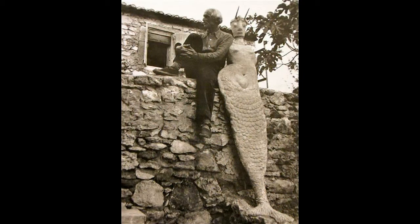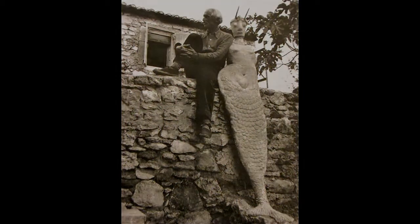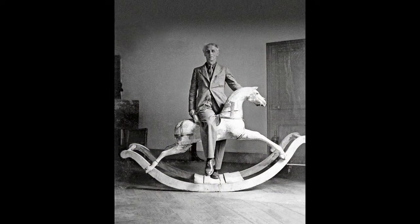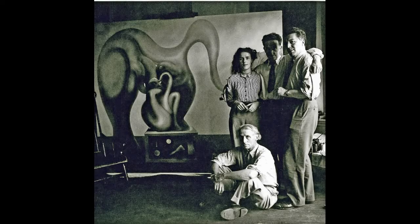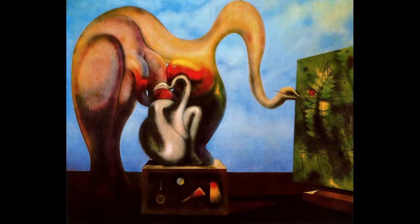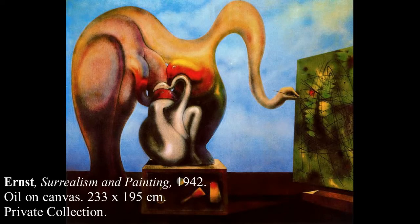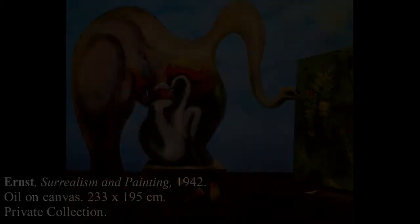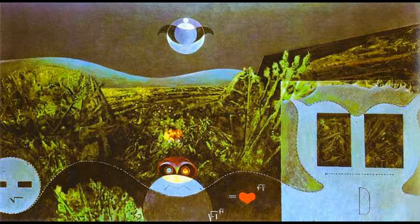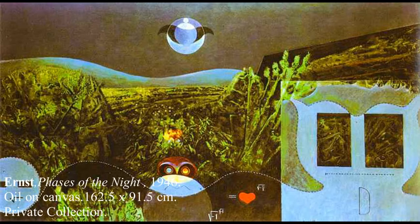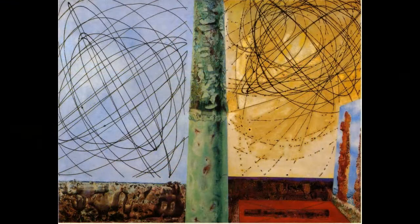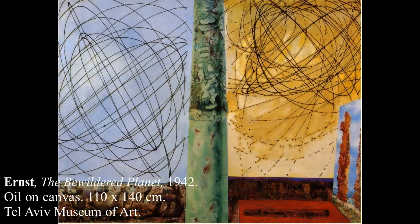In 1939, at the outbreak of World War II, the German-born Ernst was detained a few times by the Germans, but he managed to escape to the United States, where he lived for 12 years. He lived mainly in New York and worked with many other artists who had also escaped World War II. A 50-year-old Ernst still experimented with new techniques, such as Oscillation, where a paint can with holes on the bottom is swung over a canvas to create bizarre-looking dot patterns.